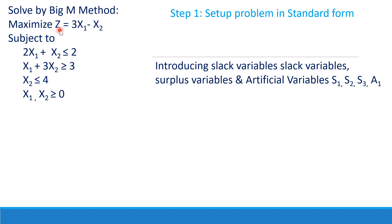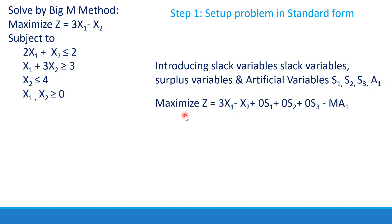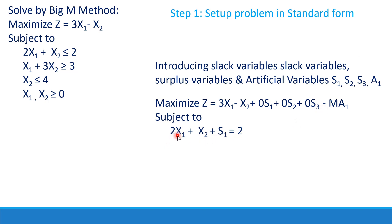For a maximization problem, the coefficient of the artificial variable in the objective function is taken as -M. In a minimization problem we take it as +M, but here we take it as -M. So the objective function becomes: maximize Z = 3x1 - x2 + 0·s1 + 0·s2 + 0·s3 - M·a1. This is a large negative penalty. The constraints become: 2x1 + x2 + s1 = 2.